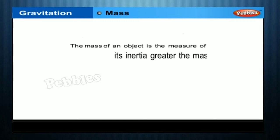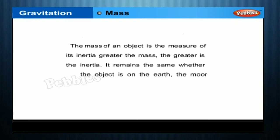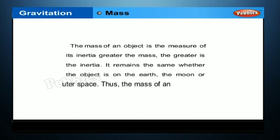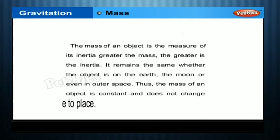Mass: the mass of an object is the measure of its inertia. Greater the mass, the greater is the inertia. It remains the same whether the object is on the earth, the moon, or even in outer space. Thus the mass of an object is constant and does not change from place to place.